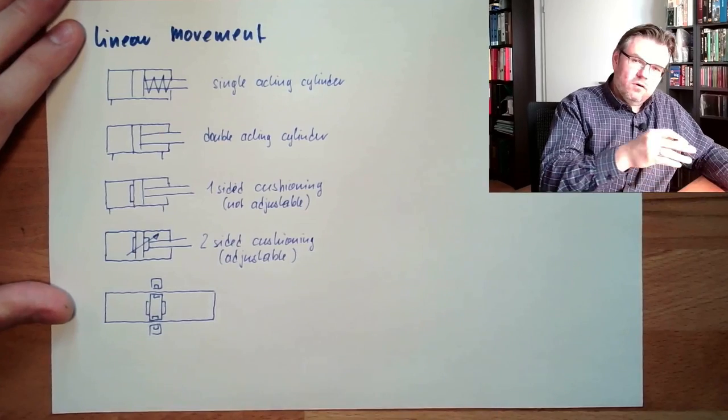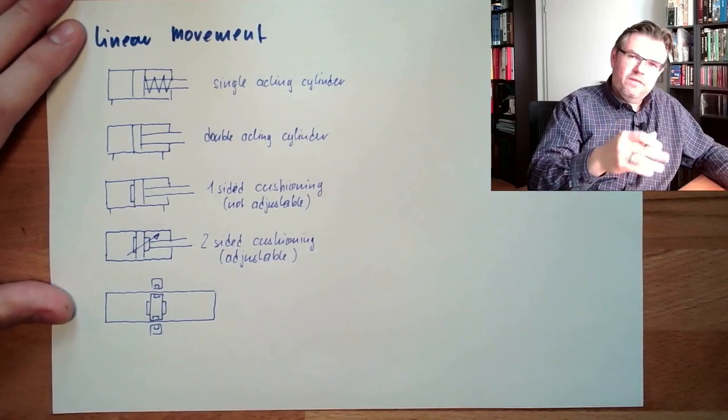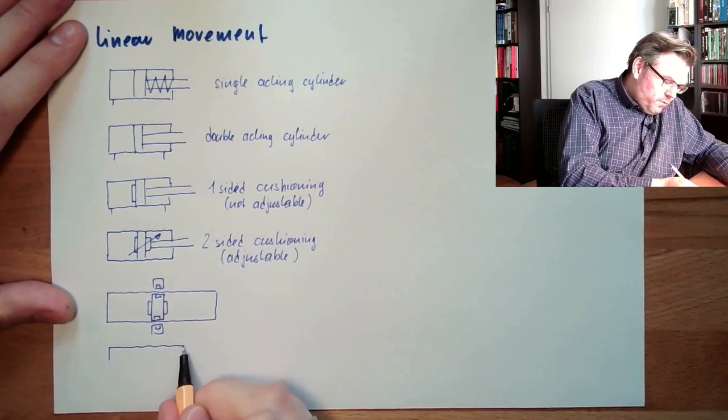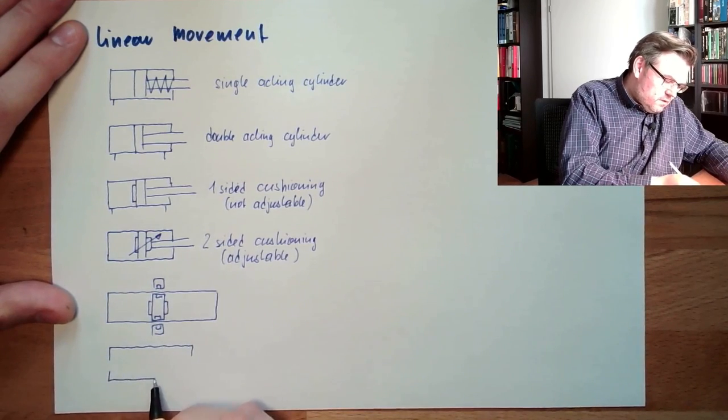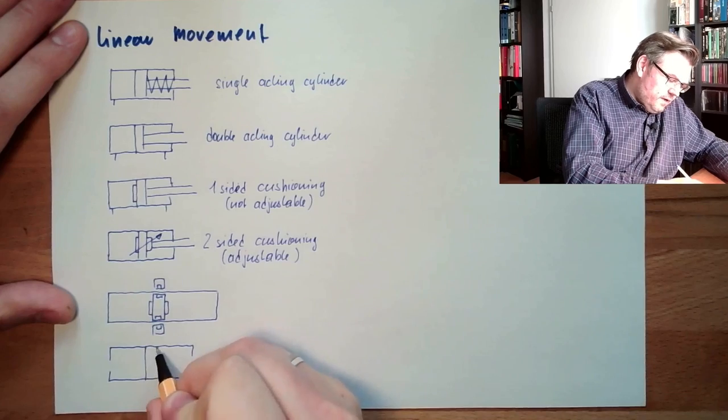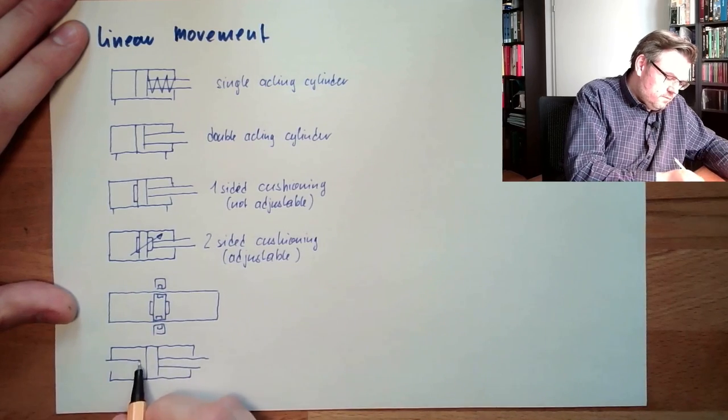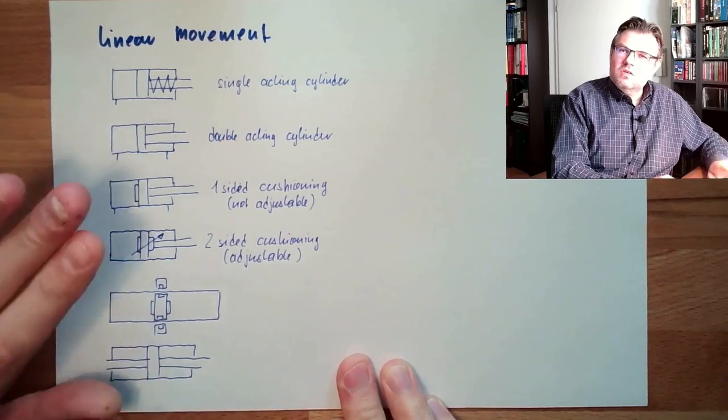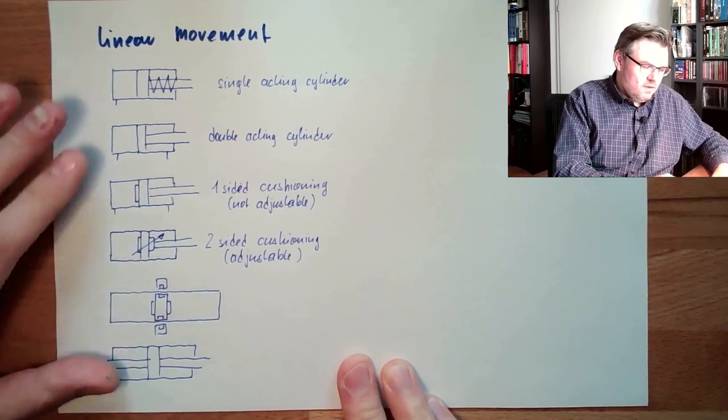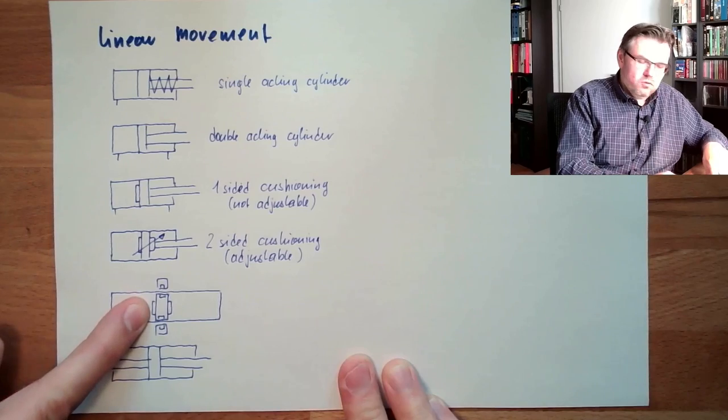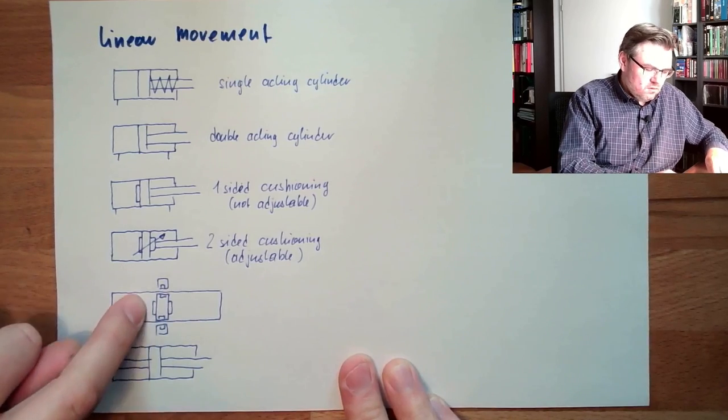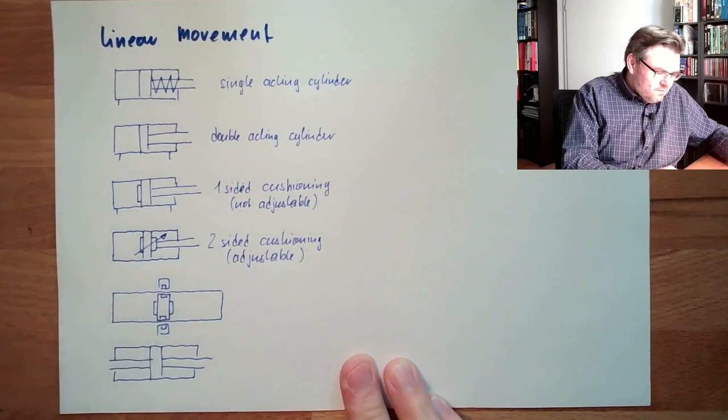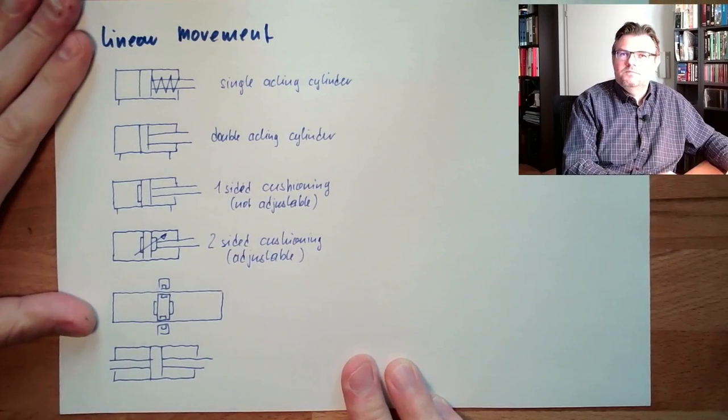For instance. And then, of course, I showed you different things like the tandem cylinder or the cylinder with the rod, which goes through the cylinder like this. Basically, the symbols are all very the same. So damping, adjustable damping, this would not be adjustable, it's fixed on both sides. And this is magnetic coupling, linear movement.